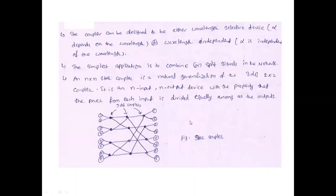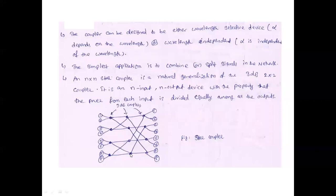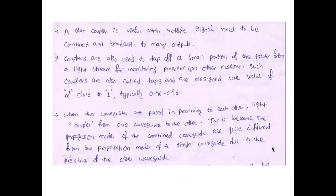When fixing a power meter at a point, it is a tap connection. Just like an overhead tank supplying water to different tap connections at different locations in your home, similarly couplers are used to check power or connect other devices at different points. The alpha value, the coupling ratio, is ideally equal to 1, but typically it is between 0.9 and 0.95.